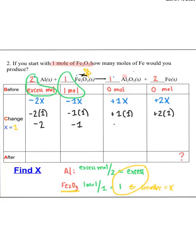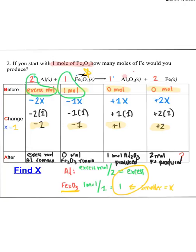Now, I'm going to find my after box. And to do that, I'm taking my before plus my change. So I'm taking my excess minus two. My one minus one. Zero plus one. And zero plus two. So excess minus two will still give me excess moles of Al remaining. One minus one gives me zero moles Fe2O3 remaining, which is a sign of my superstar, right? It's all about the superstar. It should be running out. I should have zero left over. Now my product zero plus one gives me one mole of Al2O3. And I'm going to use the word produced because we're making that. And zero plus two gives me two mole of Fe produced. The question is ultimately asking for Fe. So I'm going to circle that guy as my answer. Two moles of Fe are produced.